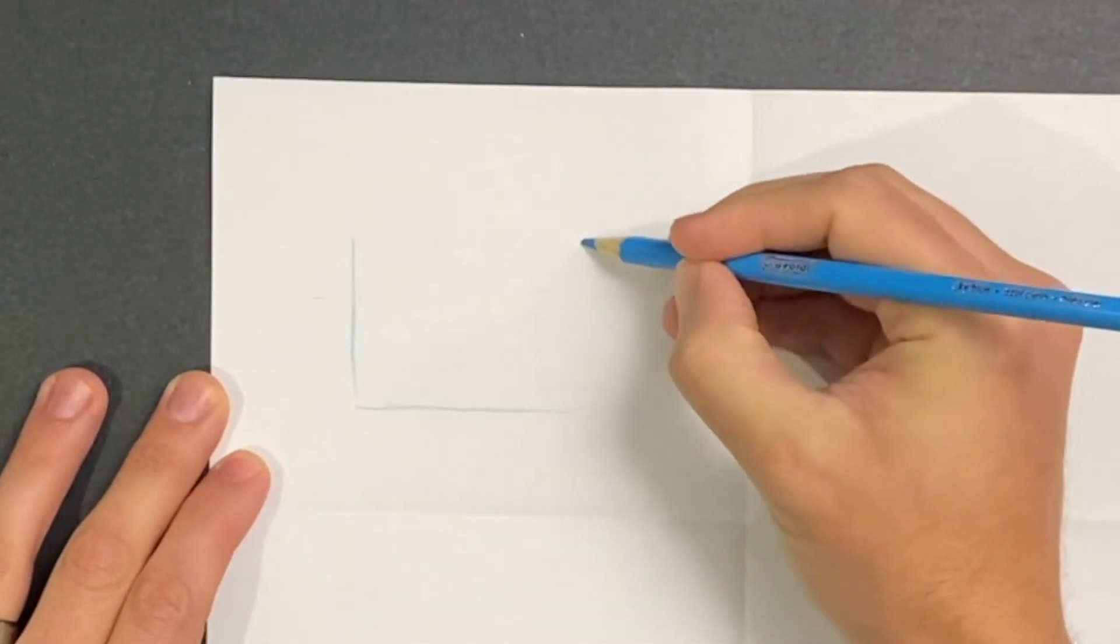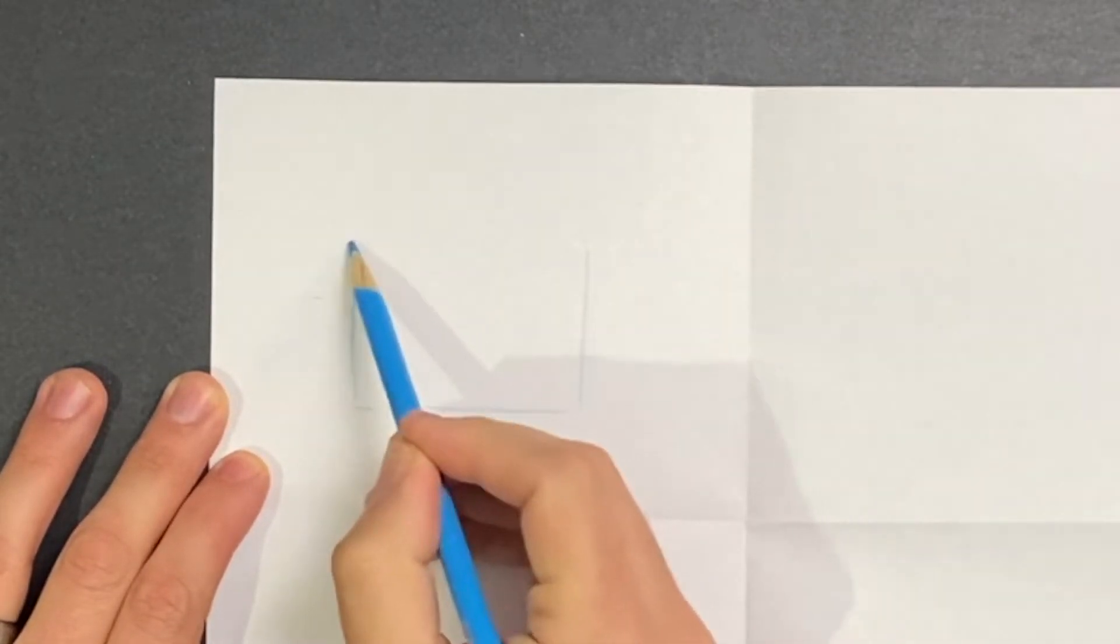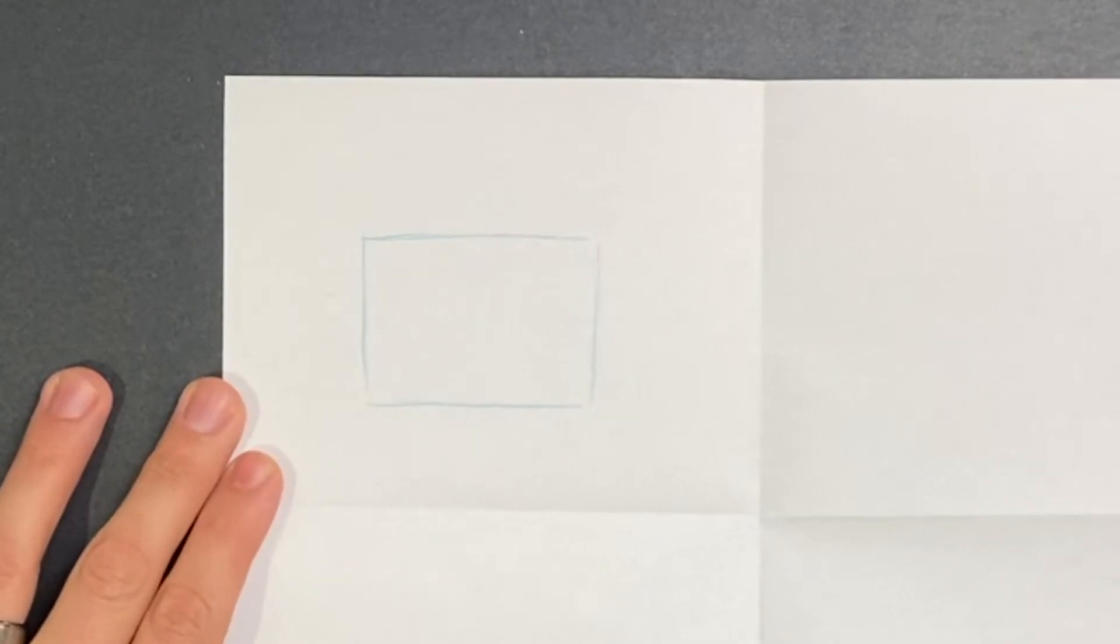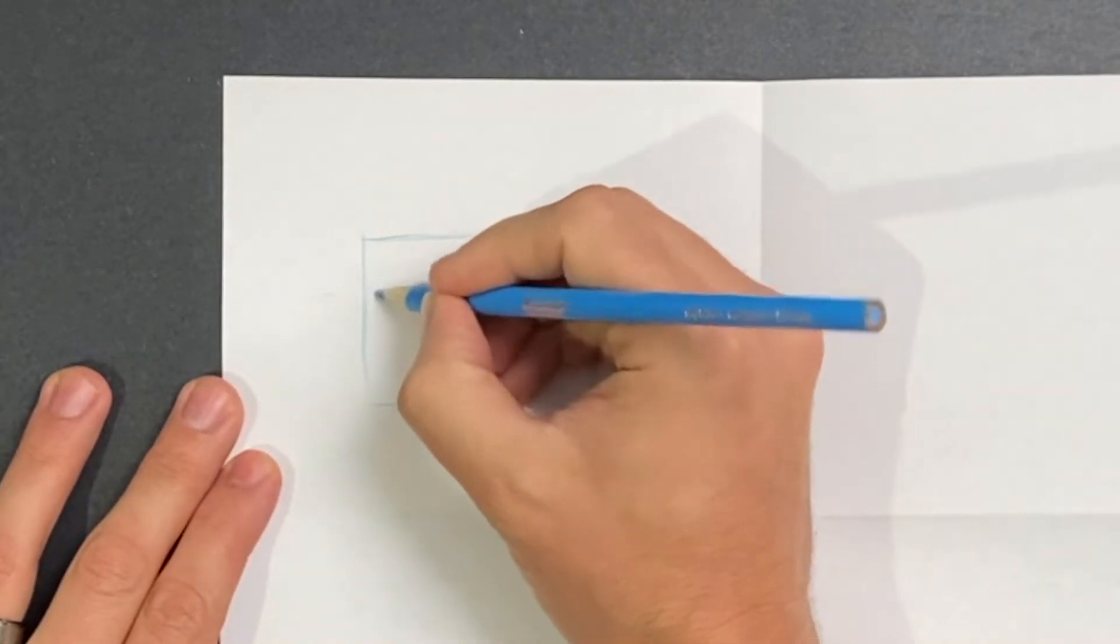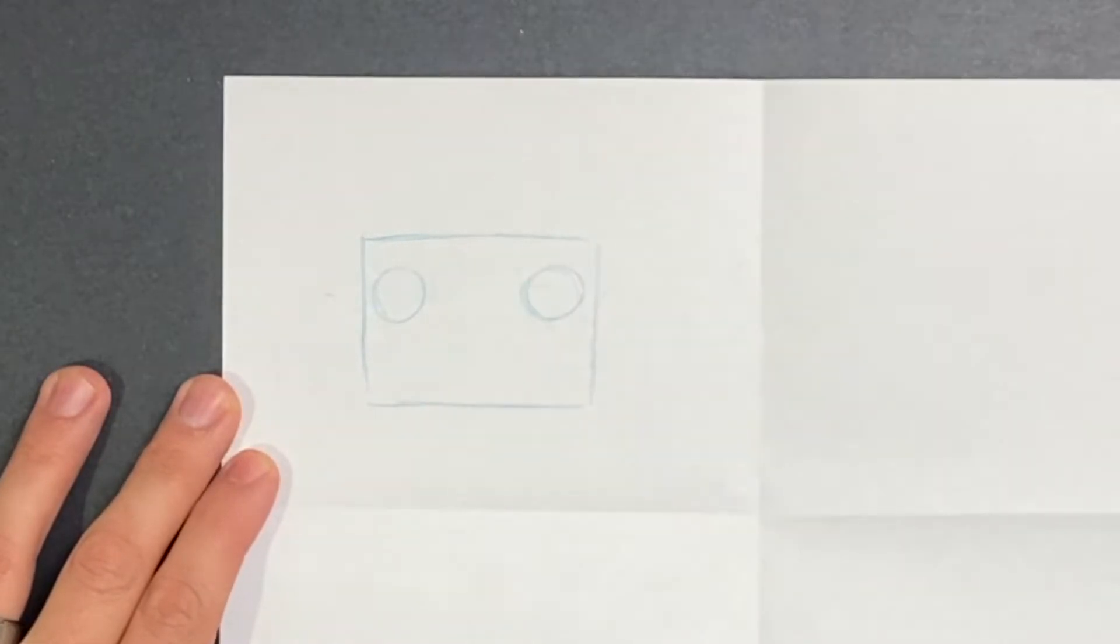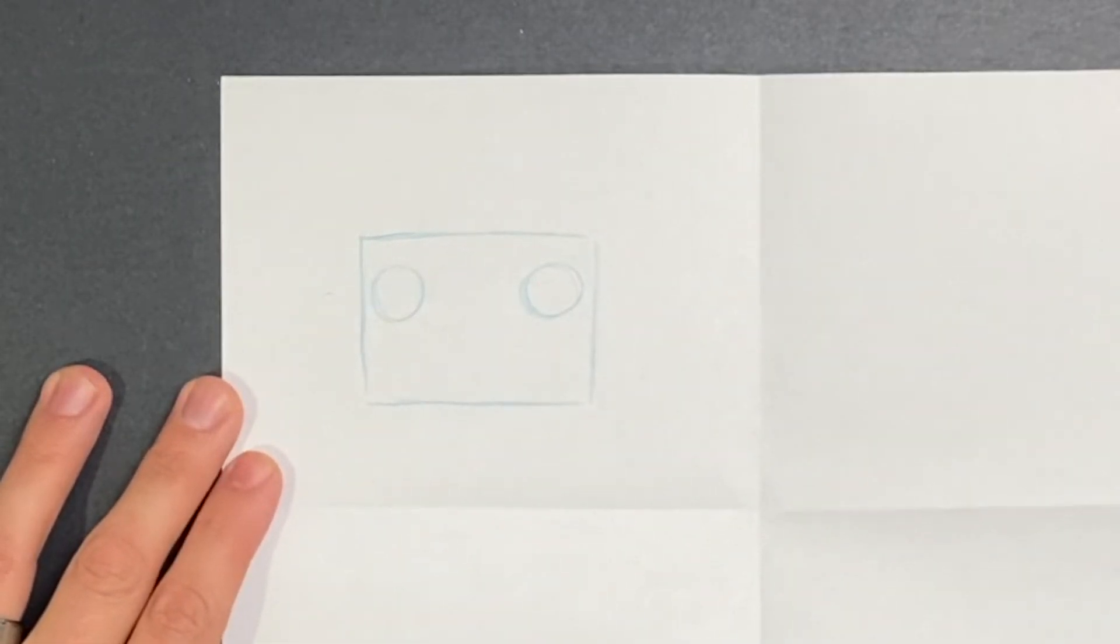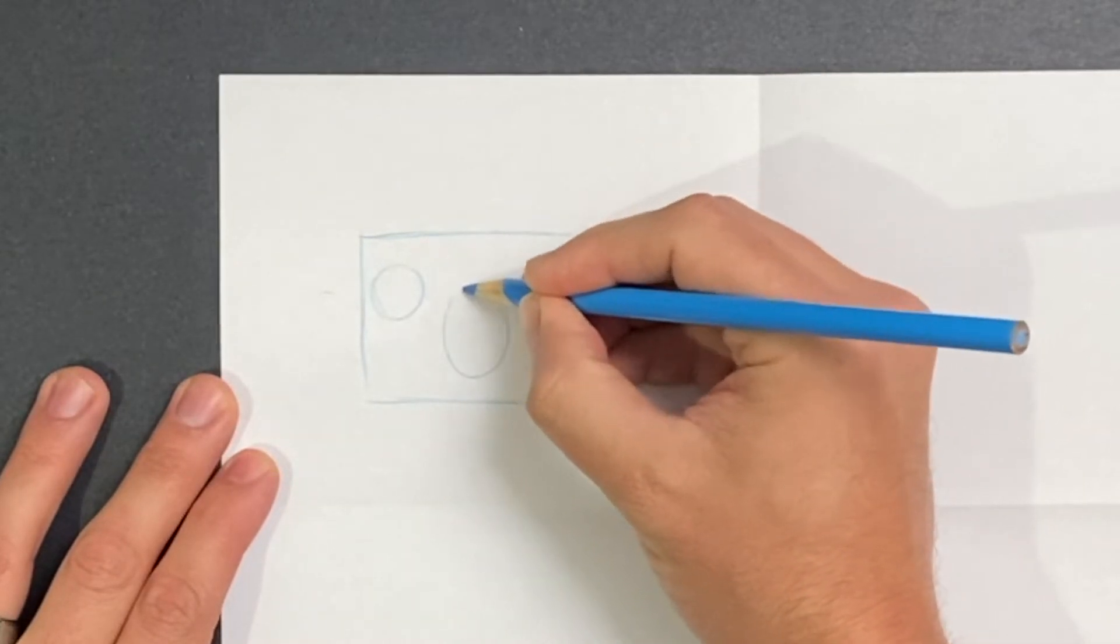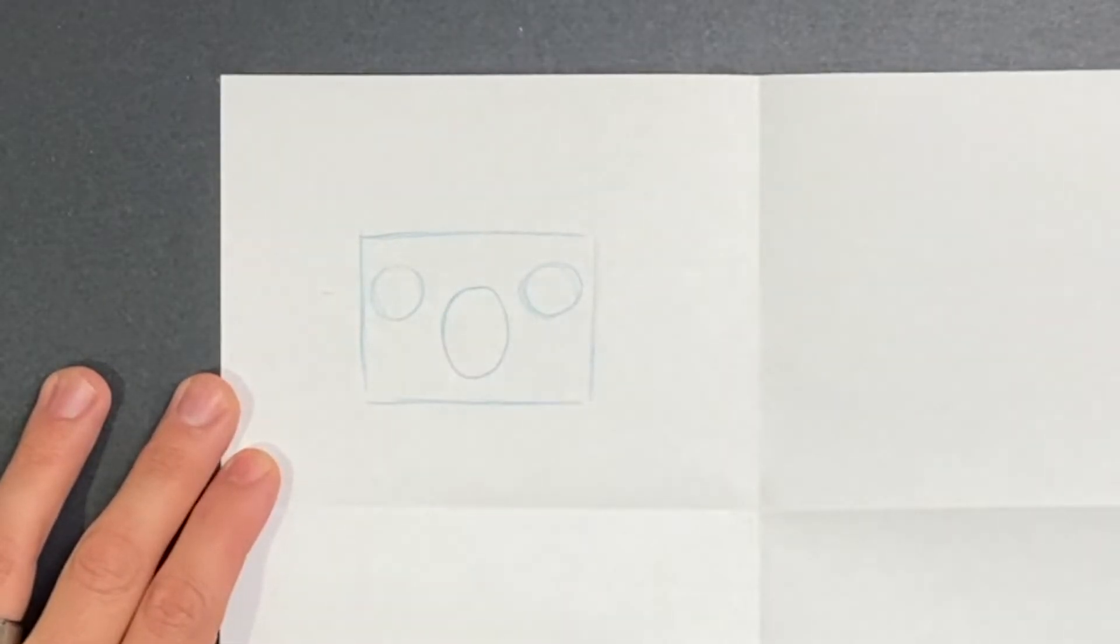I'm going to start, of course, with a square. I'm going to draw it lightly, and then inside my square, I'm going to draw two circles. I'm going to try and get these circles to be about the same size. And then after that, I'm going to put a vertical oval in between and below my circles.